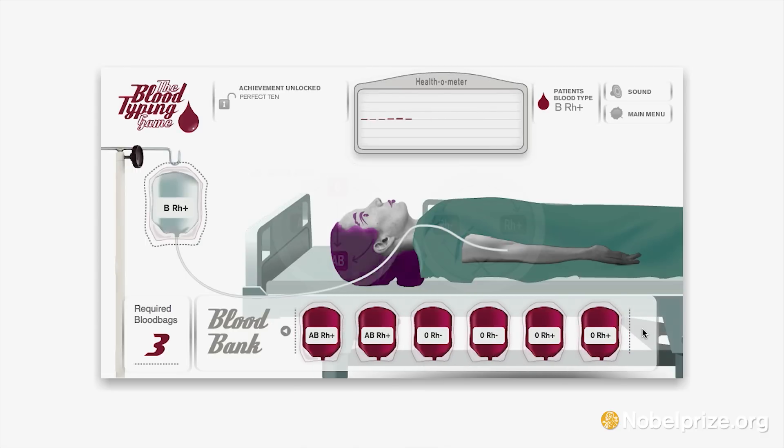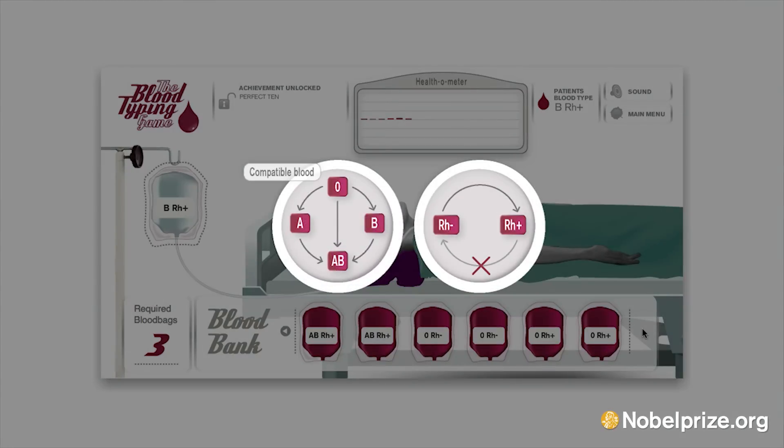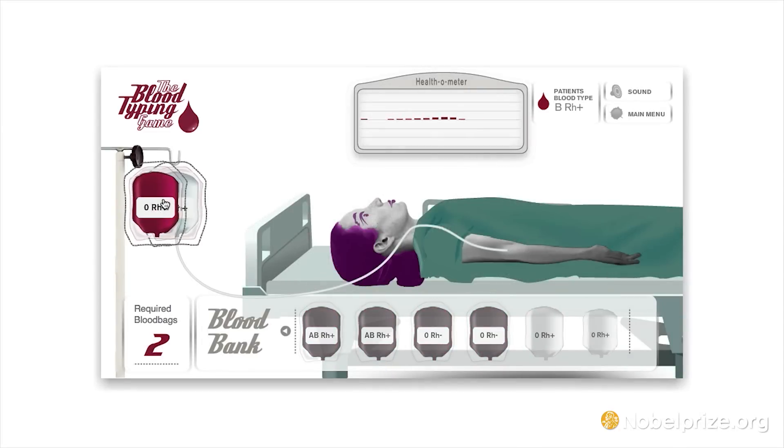This compatible blood chart shows which bloods are compatible with the others. Our patient can obviously receive B positive blood, but can also receive B negative, O positive, or O negative.